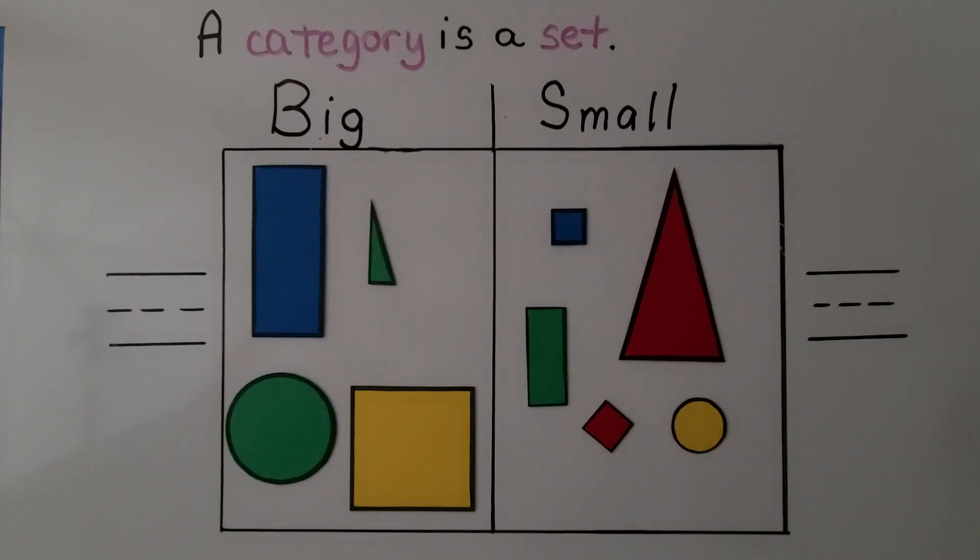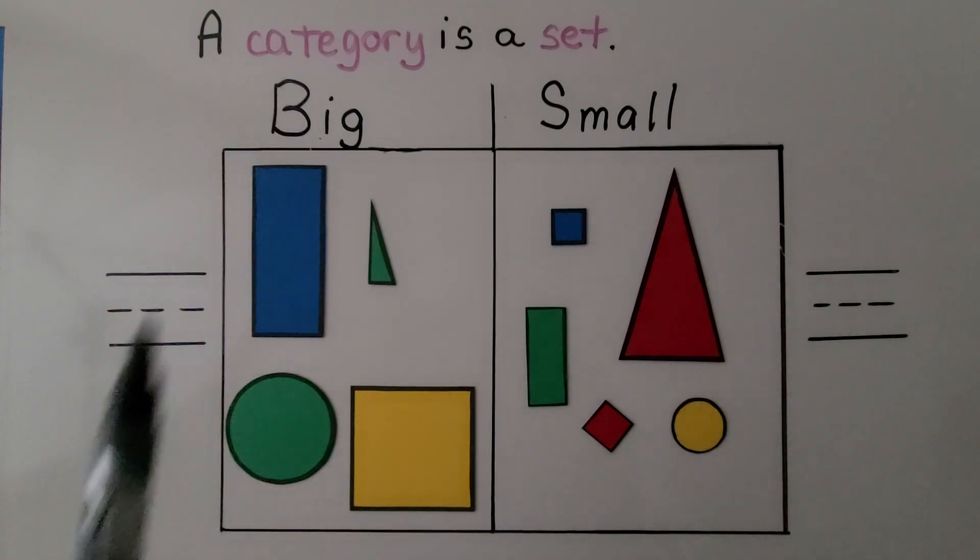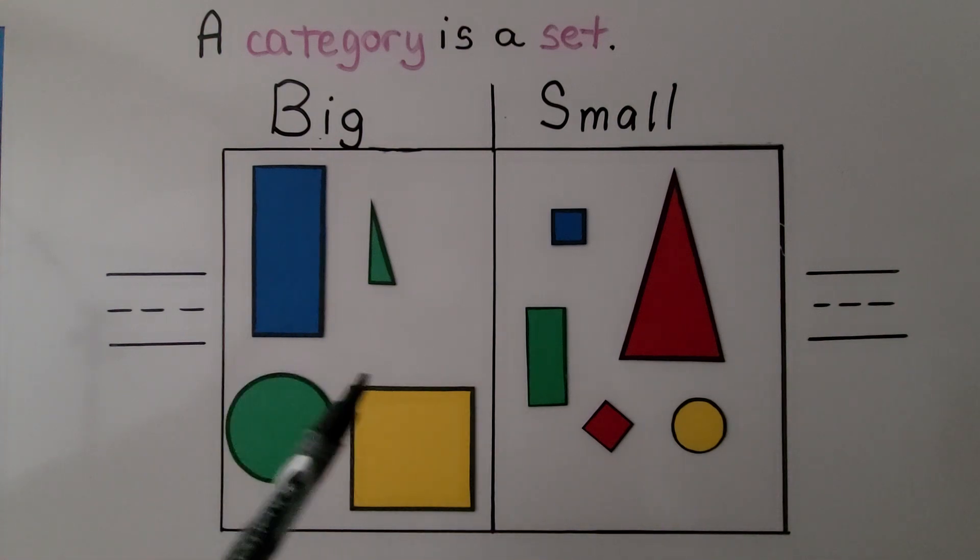These shapes are sorted and classified into two categories, big and small. Remember, a category is a set. But there's a mistake. Can you see the mistake? What do we notice about this set?